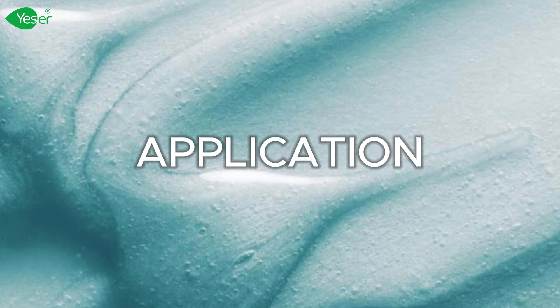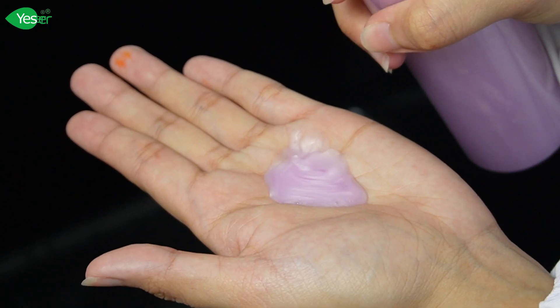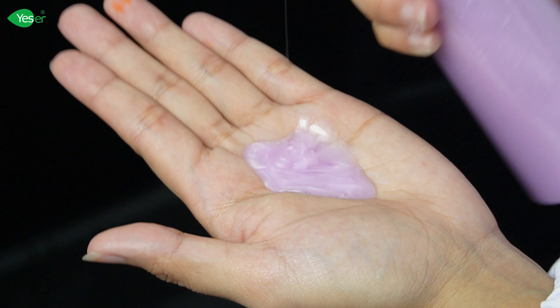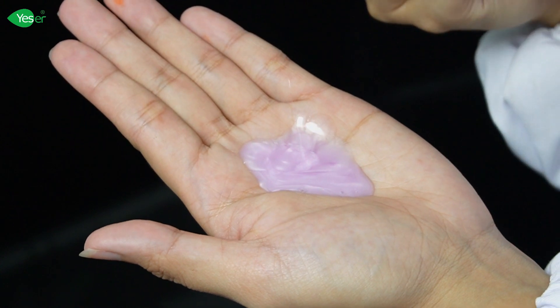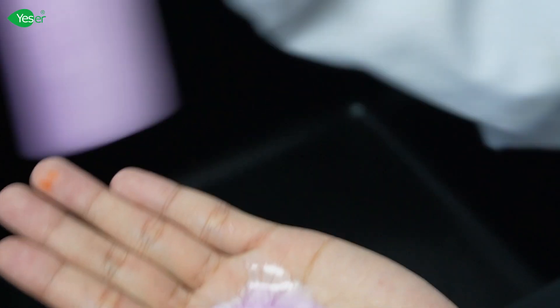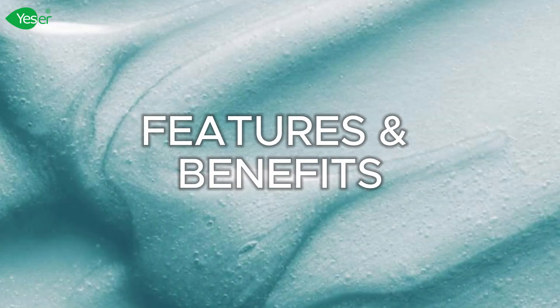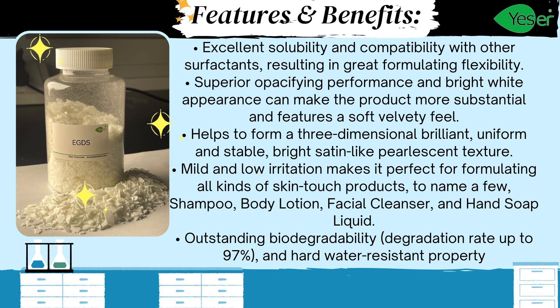Now let's talk about its application. When forced to crystallize as thin platelets, ethylene glycol distearate can give liquids and gels a pearlescent appearance, and it may also act as a skin moisturizer. The features and benefits of EGDS include excellent solubility and compatibility with other surfactants, resulting in great formulating flexibility.